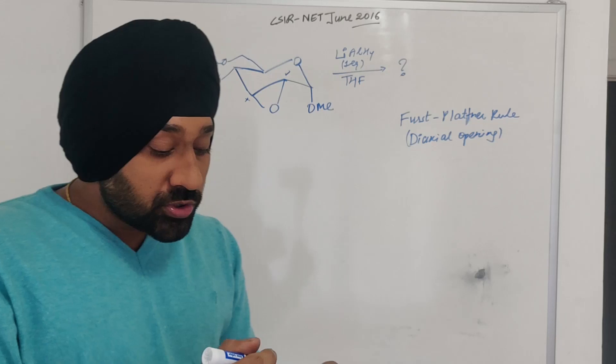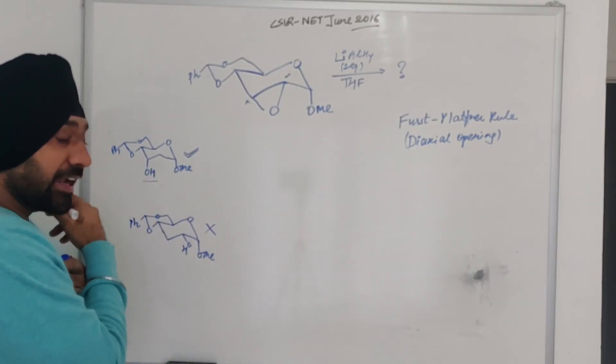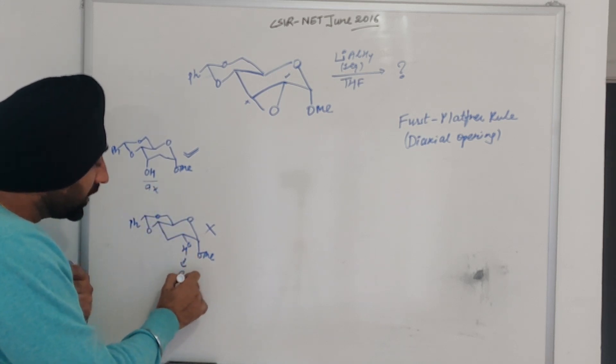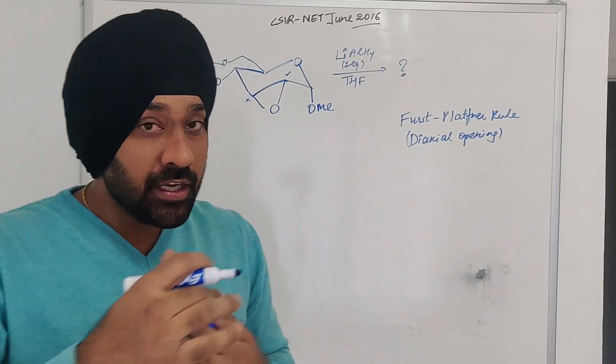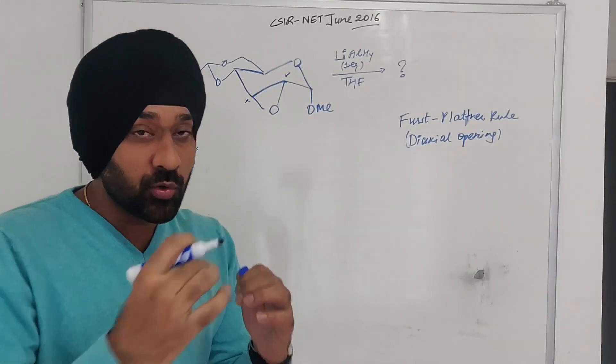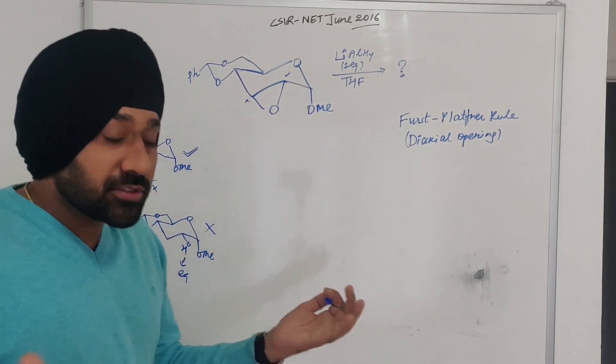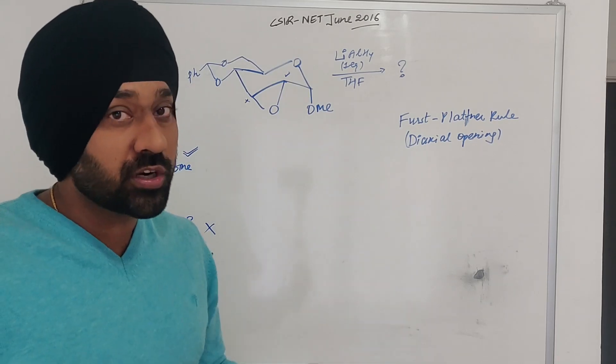Some students are thinking about this. How is this? Our OH is axial. This is axial. Our OH is equatorial. We have always been told that if our substitution is in equatorial position, it is very stable. If it is axial, then it is not stable unless there is intramolecular hydrogen bonding or another factor.